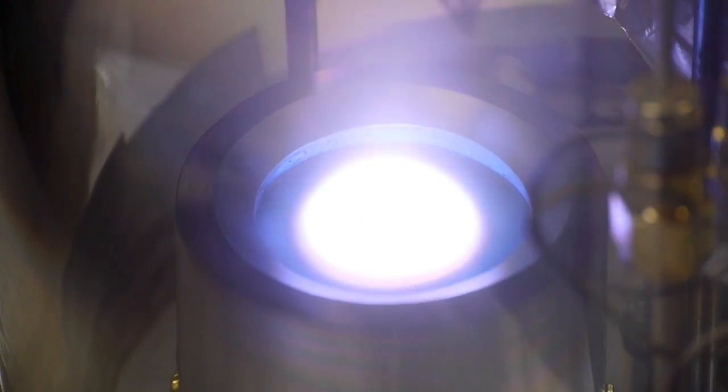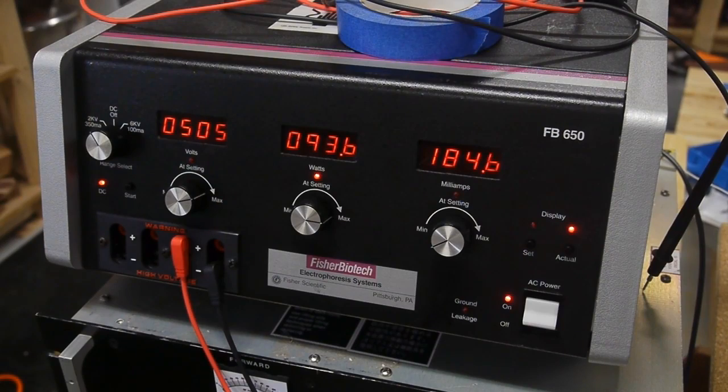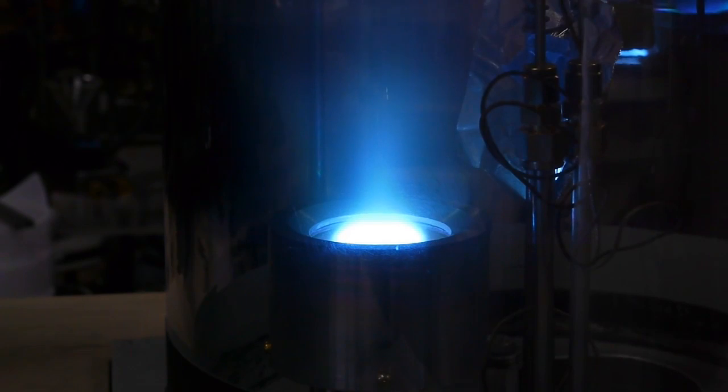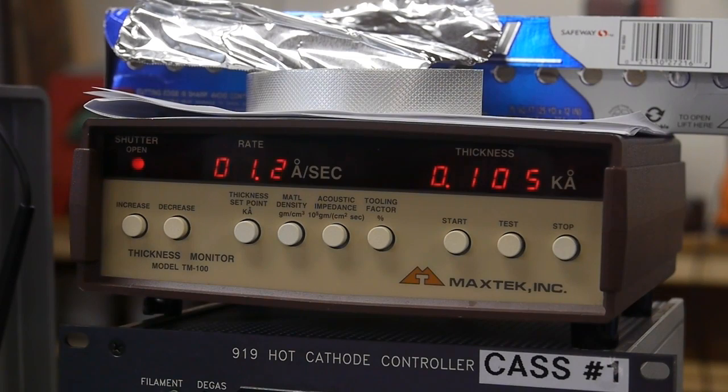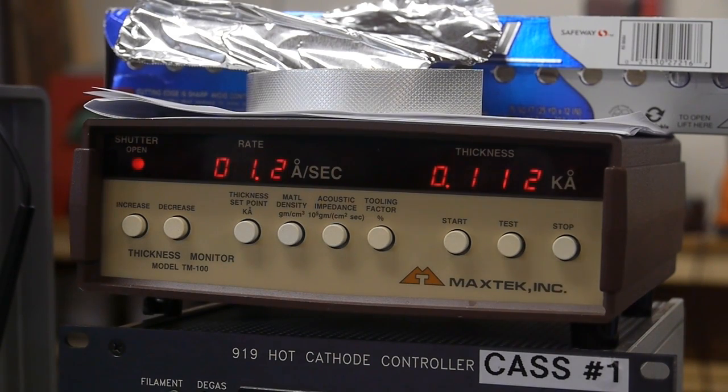The target diameter is about 2 inches and we're running close to 100 watts. After a few minutes, the argon sputtering has broken away all the titanium oxide and we are sputtering bare metal. We can tell because the color of the plasma changes too. So when the titanium is bare, the plasma color is greenish, bluish-greenish. Also, we can see that the crystal thickness monitor is now registering titanium being deposited.